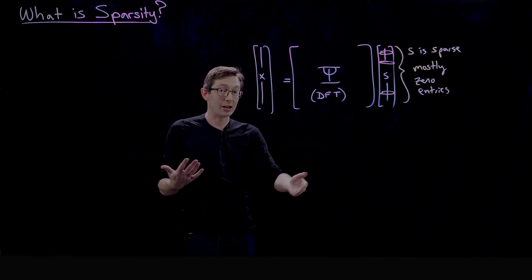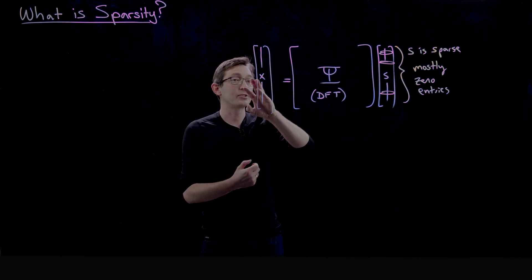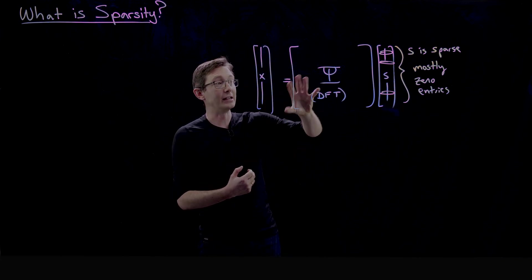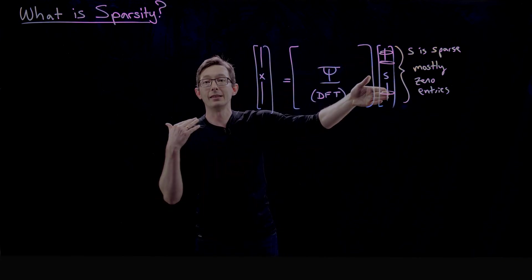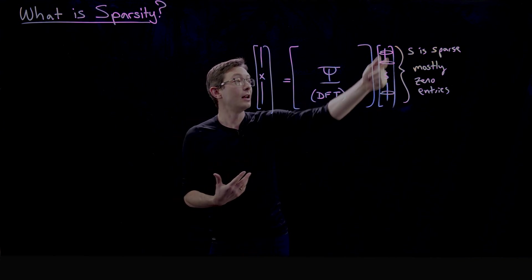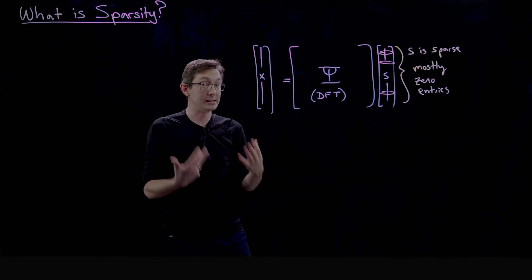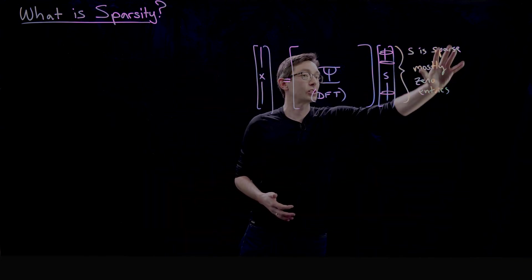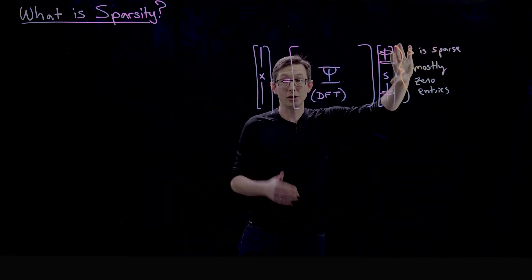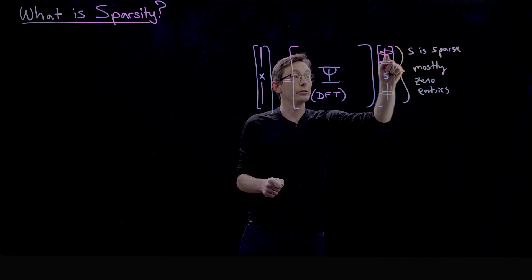So this is the idea of sparsity and compression: we take our signal X, we represent it as a vector in some other basis, and in that other basis, if we're careful, then that vector s will be sparse, meaning mostly zeros. And that allows us to store a lot less information than our million pixels—we only have to store these non-zero coefficients.